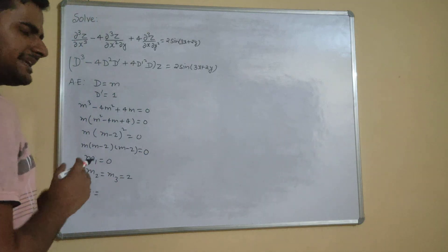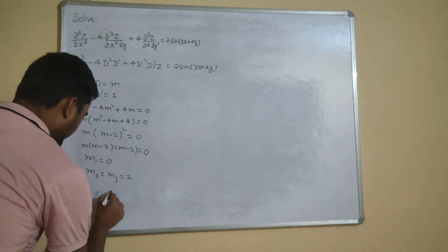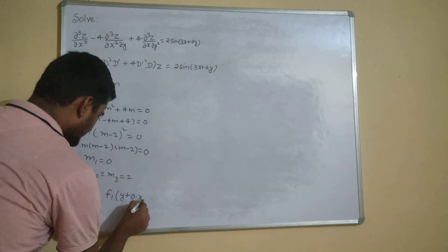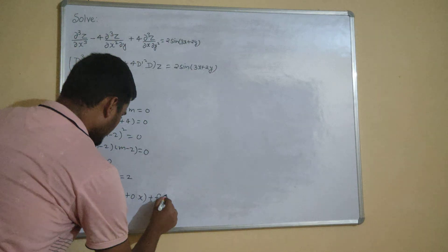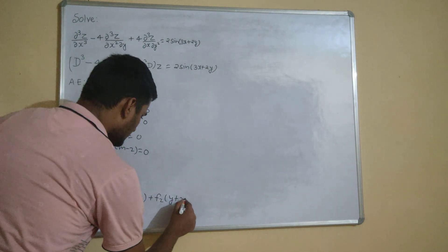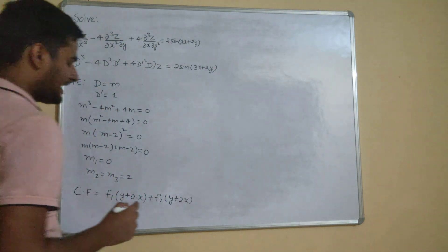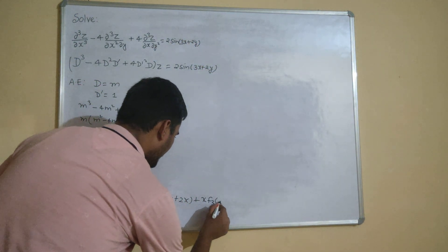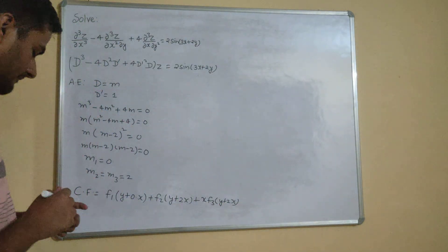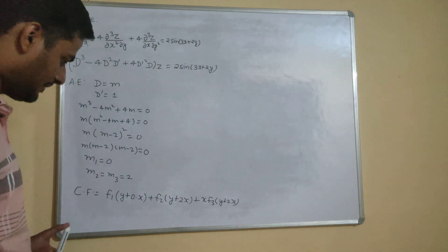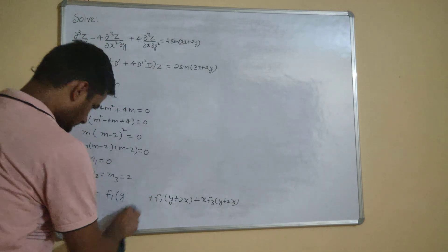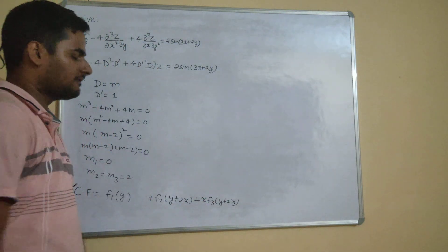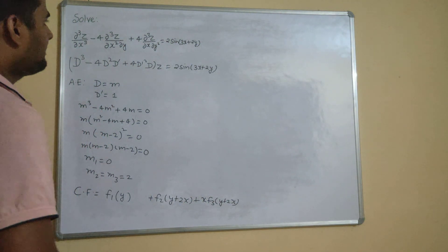In case the roots are distinct, we write F₁(Y + M₁X). Since M₁ is 0, that gives F₁(Y). Then F₂(Y + M₂X), which is F₂(Y + 2X). Because the third root is repeated, as in ODE we multiply by X, giving X·F₃(Y + 2X). So the CF is: F₁(Y) + F₂(Y + 2X) + X·F₃(Y + 2X).